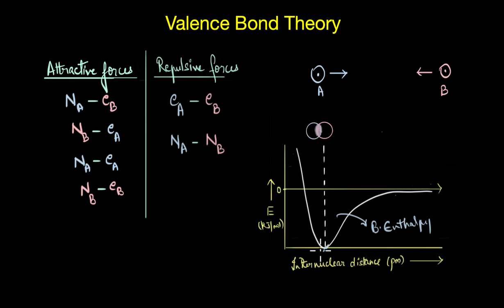Now, the Valence Bond theory explains this bonding as the overlap of atomic orbitals of atoms A and B. As the two atoms approach each other, their electron clouds start overlapping, and this overlap allows the electrons to be closer to the nuclei of both the atoms. It is this region of overlap where we find the shared pair of electrons that make up the covalent bond. Greater the overlapping of the atomic orbitals, stronger would be the covalent bond. Now, there are conditions for this overlap to actually transform into a stable bond.